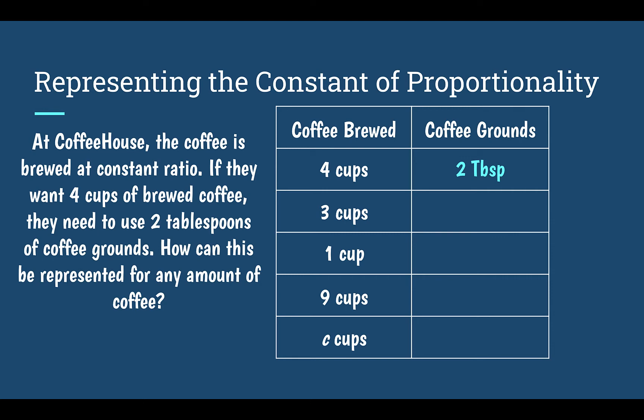The first thing I want to do is figure out my constant of proportionality. To do that, I'm going to take my end — what's on the right — and divide that by my start, or what's on the left. In this case, it would be two over four, or two divided by four. We can reduce that to a fraction of one half, or divide it out to get 0.5. I'm going to leave it as one half. So my constant of proportionality for this table is one half, meaning I'm going to multiply everything by one half.